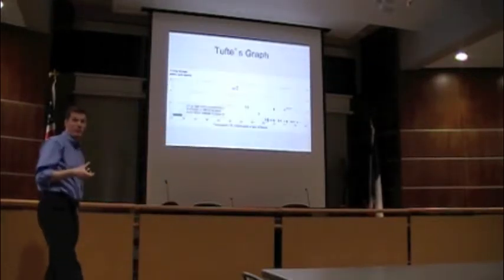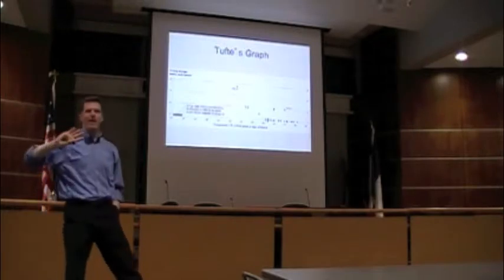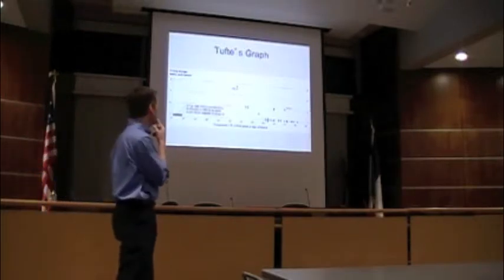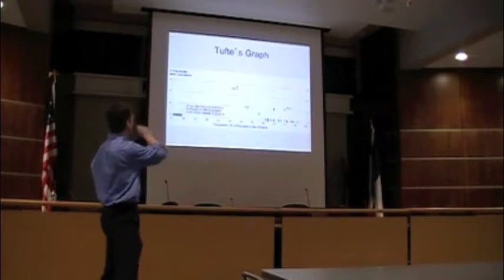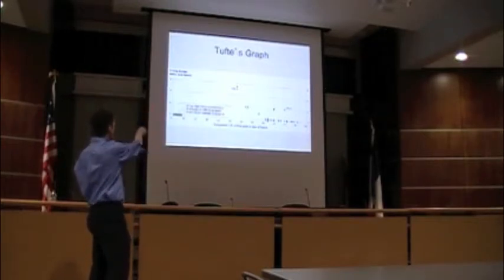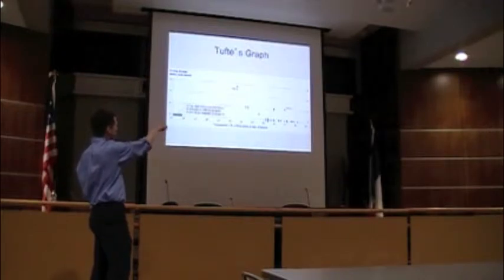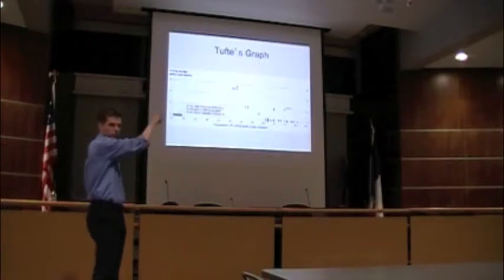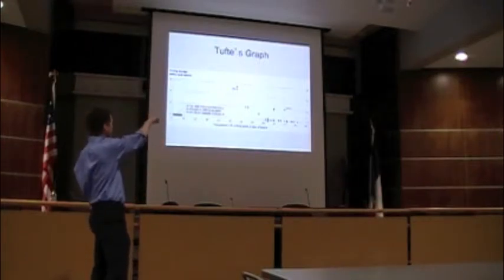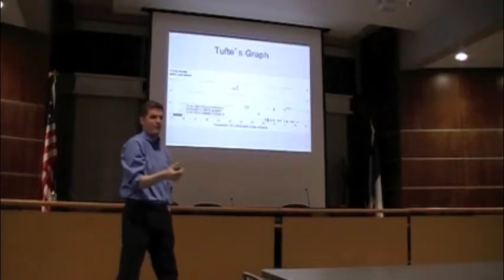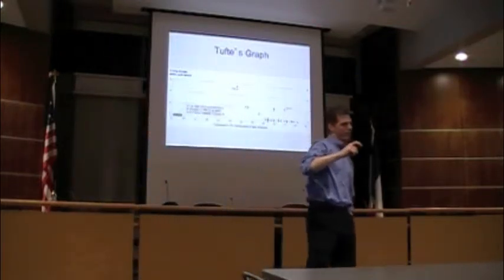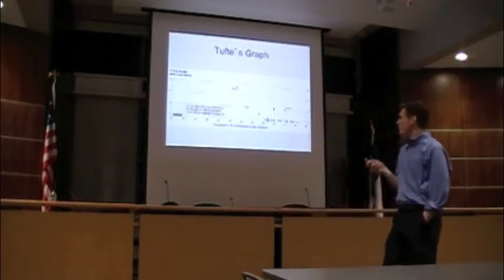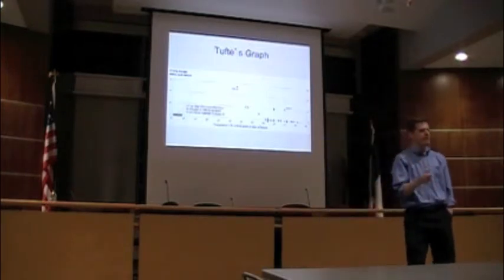A graph that might have helped — made in retrospect by Edward Tufte — plotted the launch temperature against all previous launches, showing O-ring damage at each temperature. You could see that at the cold launch temperature, damage was foreseeable. They had the data to make the correct decision, but it wasn't visualized correctly at the right time. So visualizing data effectively is critically important.